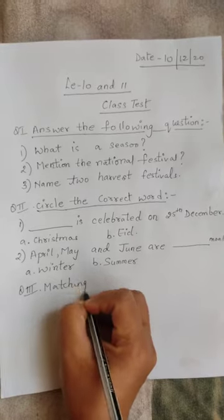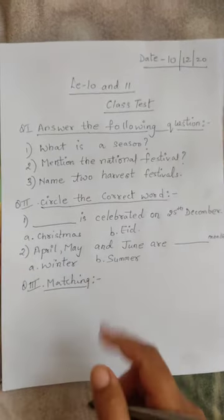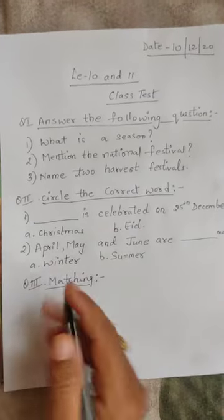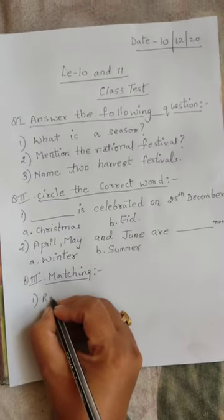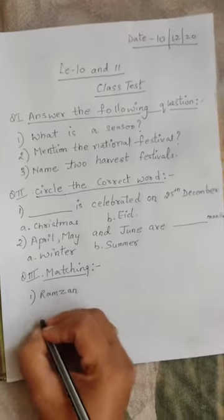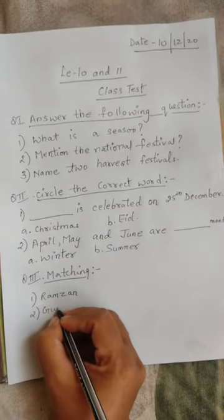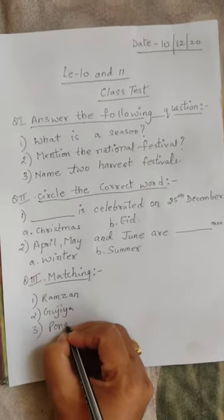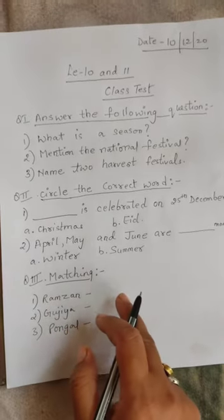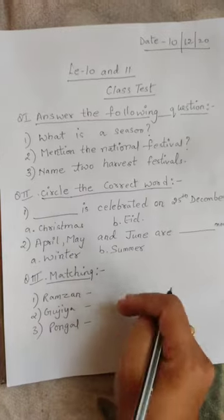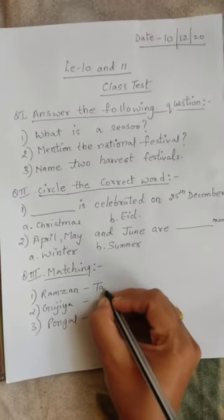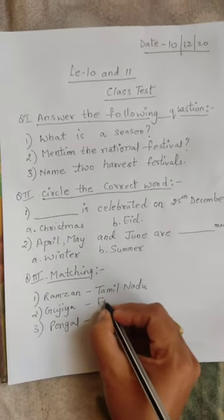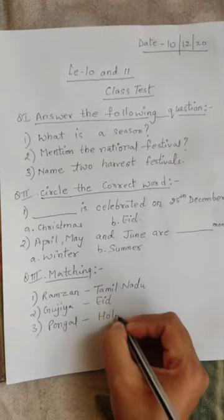Question number three — matching. You don't have to draw lines and match; you have to write the answer in front of the question. The items to match are: first — Ramzan, second — Gujia, third — Pongal. The answers to choose from are: Tamil Nadu, Eid, and Holi.